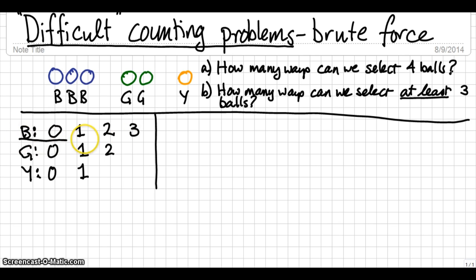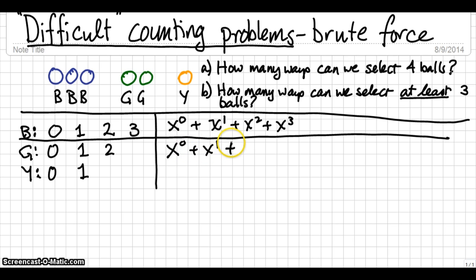So, for the blue, to represent no balls chosen, we'll say x to the 0. For one ball chosen, that's x to the 1. And x squared will be two balls chosen, and x cubed will be three balls chosen. And, we'll show that they're added together. So, this is basically the total number of ways to choose each ball, if you wish to look at the corresponding coefficient.